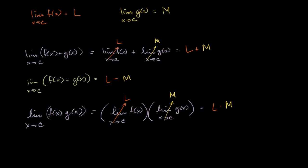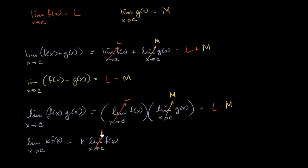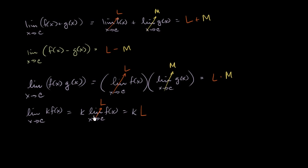The same thing applies if instead of a function we have a constant. The limit of k times f of x as x approaches c, where k is just some constant, is equal to k times the limit of f of x as x approaches c, which is just equal to k times L. This is often called the constant multiple property.